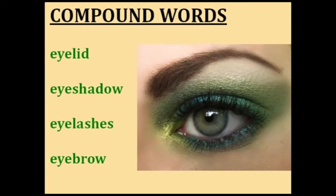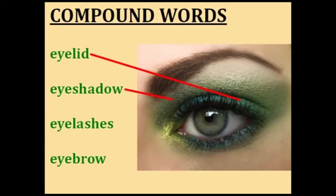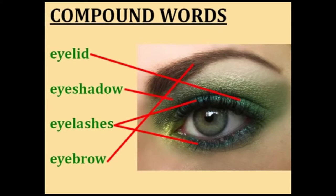Now I'm going to teach you four words related to your eyes. We'll start with eyelid — your eyelid is the small fold of skin that covers your eyes when you close them. Women like to decorate their eyelids with a type of makeup called eyeshadow. These tiny hairs on your eyelids — on the top and on the bottom — are called your eyelashes. And the line of hairs above your eye is your eyebrow. So four compound words with eye: eyelid, eyeshadow, eyelash, and eyebrow.